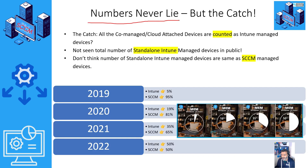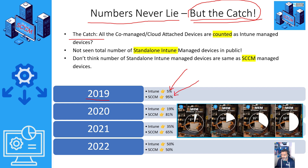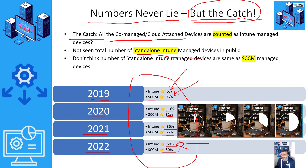Numbers never lie, but we can play with numbers — and there is a catch here. Looking at the data: in 2019, only 5% of devices were managed by Intune and 95% by SSCM. In 2020 it changed to 19% vs. 81%. In 2021 it was 35% vs. 65%. And in 2022 it reached 50/50. But what does this mean exactly? Does this mean 50% of devices are managed by standalone Intune, or are 50% of those devices co-managed or cloud-attached?